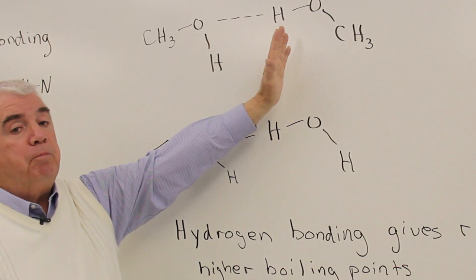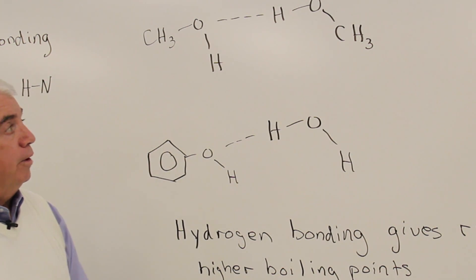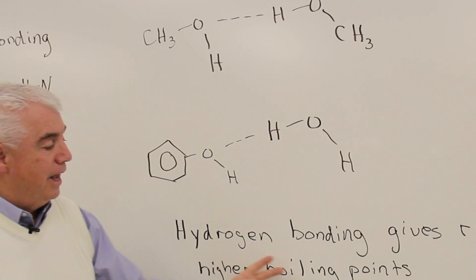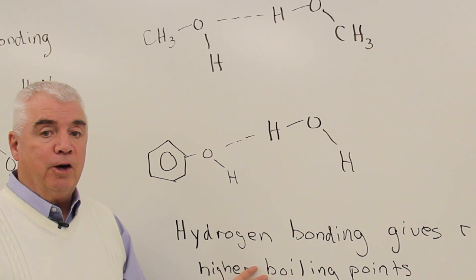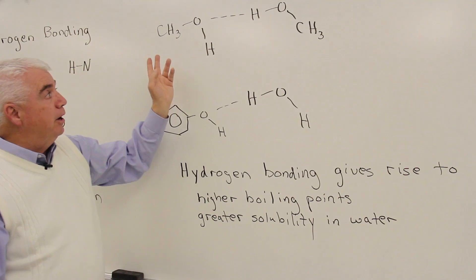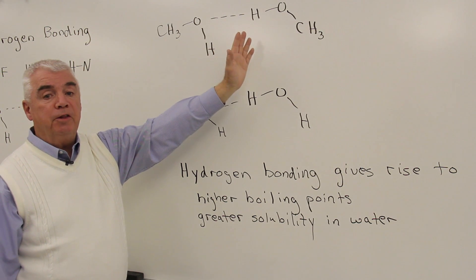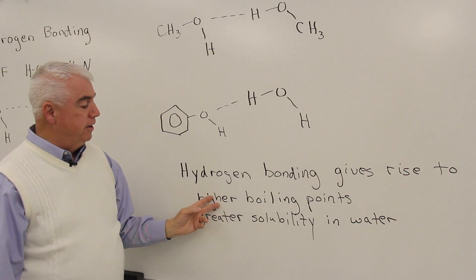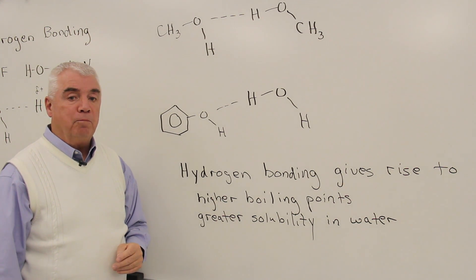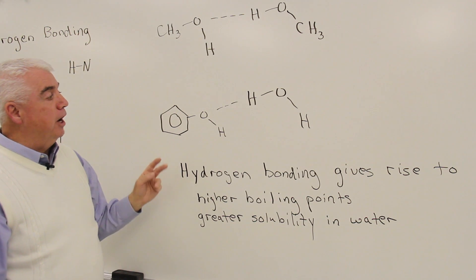So within a sample of methanol, we've got additional attractive forces because of these hydrogen bonds. And methanol has a higher boiling point because of it. If we were to compare molecules of similar molecular weight, the alkanes and the alcohols, we find that the alcohols have higher boiling points. And the reason is hydrogen bonding.